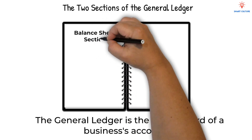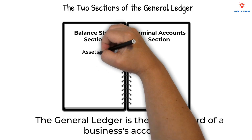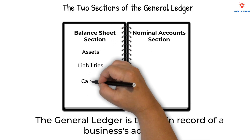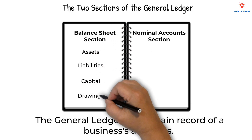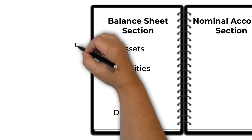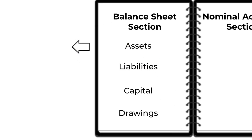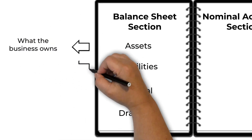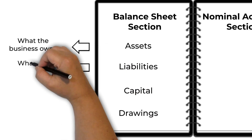The balance sheet section contains accounts for assets, liabilities, capital, and drawings. Assets are the things the business owns, like vehicles, equipment, and cash in the bank. Liabilities are what the business owes to others.